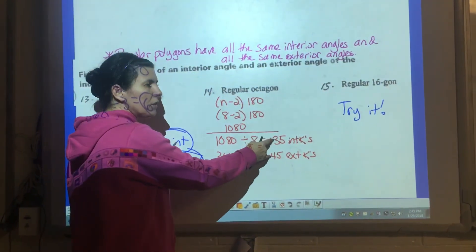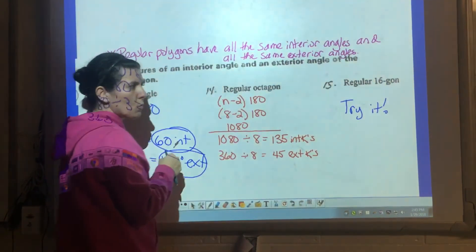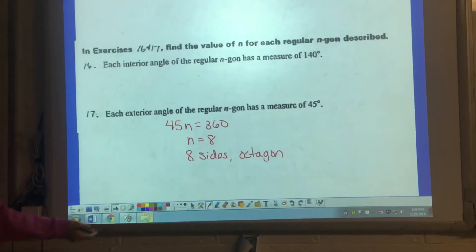Hopefully you notice that the interior and the exterior angles will always add up to 180. Try 15 with the 16-gon.